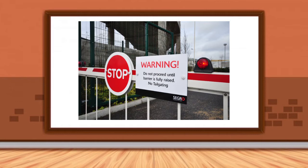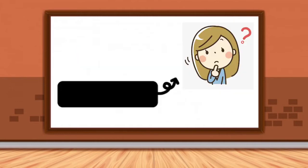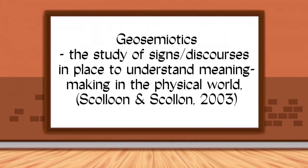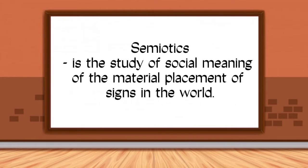What is geosemiotics? According to Scollon and Scollon (2003), geosemiotics refers to the study of signs or discourses in place to understand meaning-making in the physical world. Semiotics itself is the study of the social meaning of the material placement of signs in the world. By signs, we mean to include any semiotic system, including language and discourse.